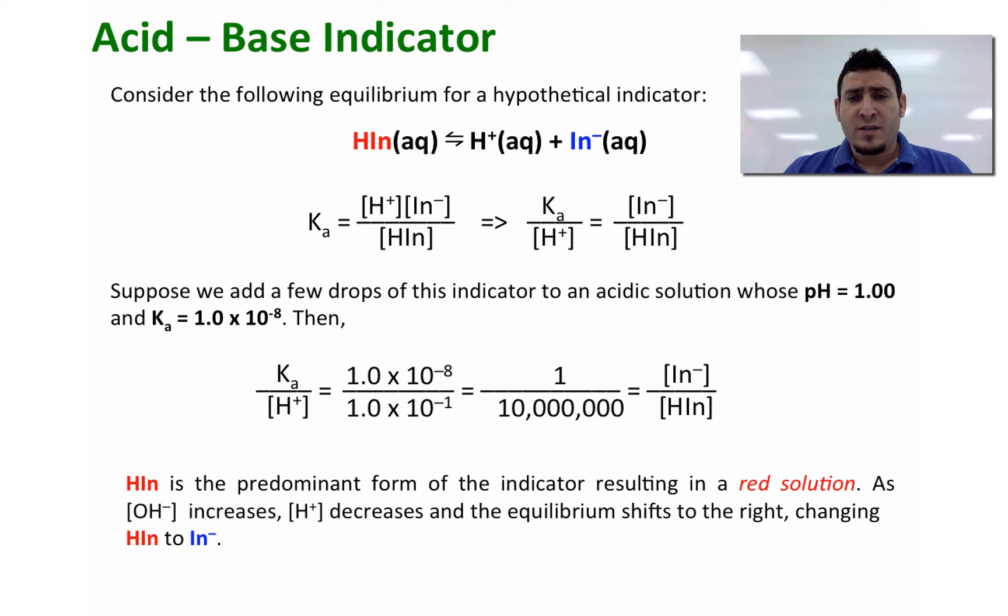So in this case we can see that the form HIn is the predominant form for the indicator, resulting in a red solution. Assuming that this indicator is red when it's acidic and blue when it's basic, as OH⁻ increases, the concentration of H⁺ decreases and the equilibrium shifts to the right, changing the color from red to blue.